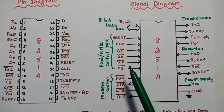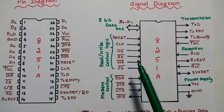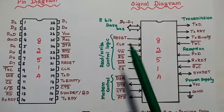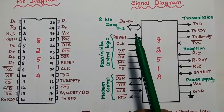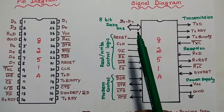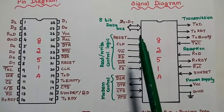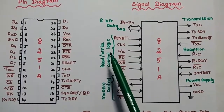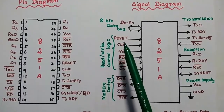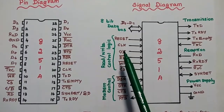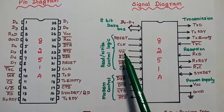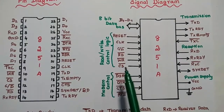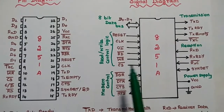We can group the signals based on their operation. The first group is the data bus, which has 8-bit data. The next group is the read, write, and control logic signals: reset, clock, C/D bar, read signal, write signal, and chip select signal.